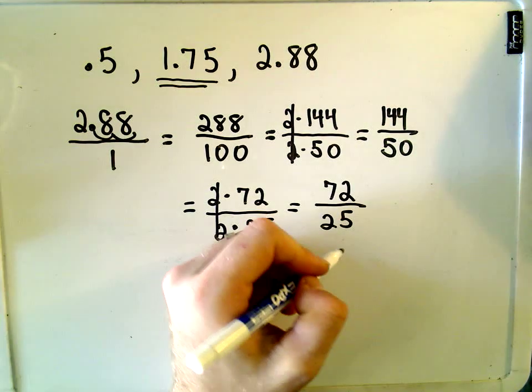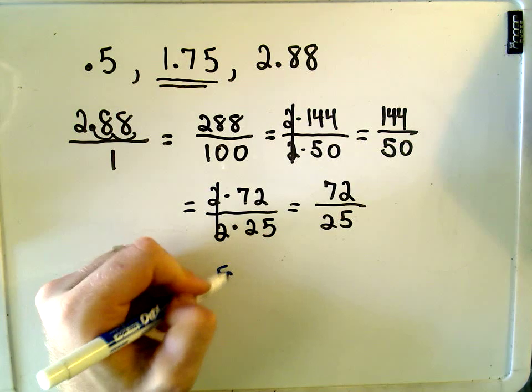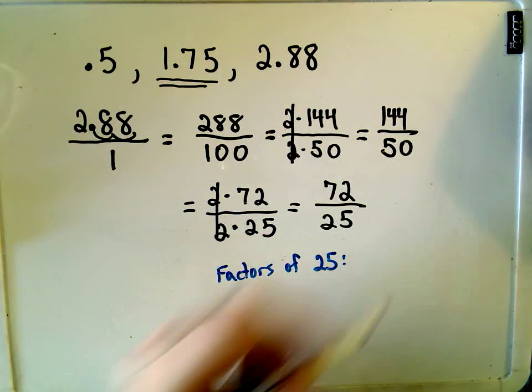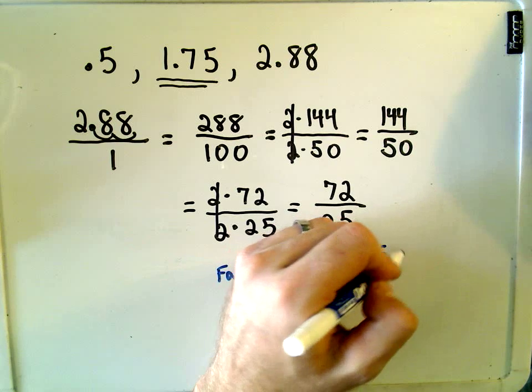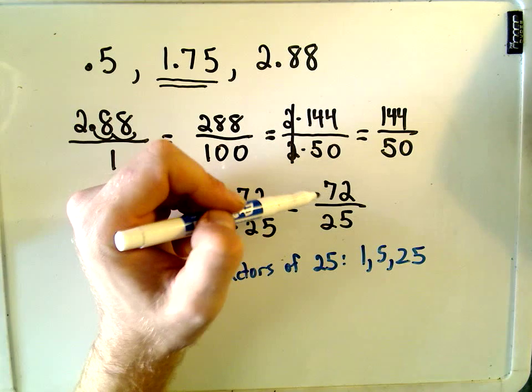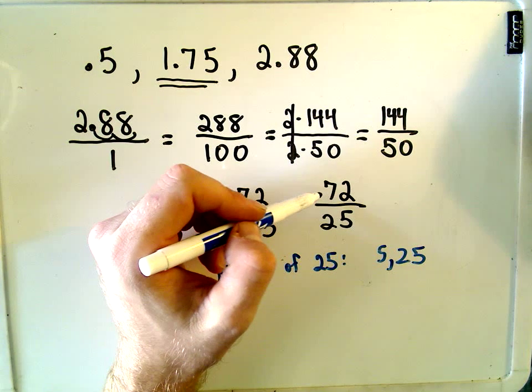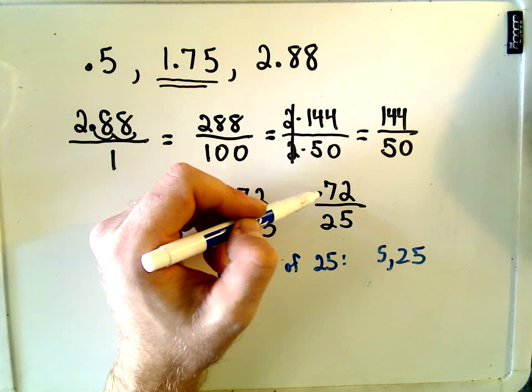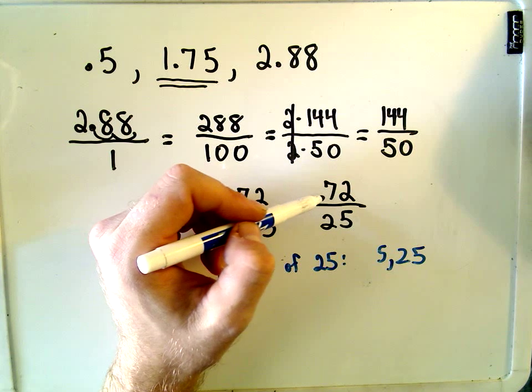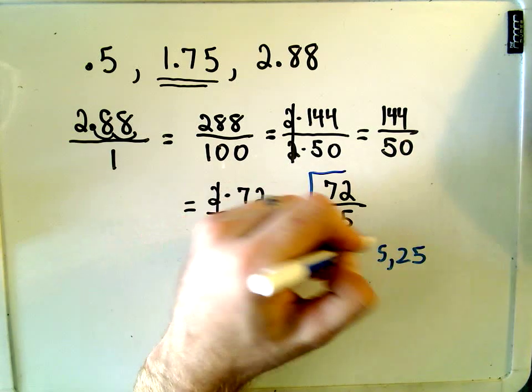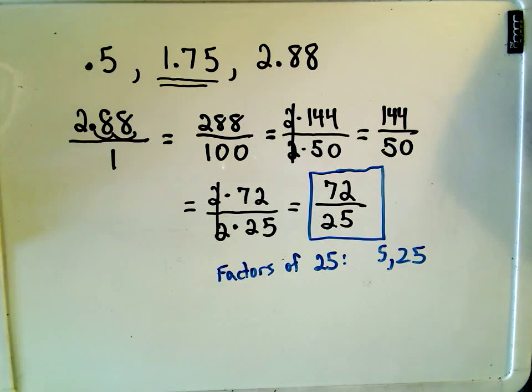If you think about factors of 25, the only thing that you can multiply whole number-wise would be 1, 5, and 25. 1 doesn't really help in terms of reducing your fraction. 5 doesn't go into the number 72, and likewise 25 won't go into the number 72. So that means we've now reduced our fraction as much as possible, and you can write the decimal 2.88 as 72 over 25.